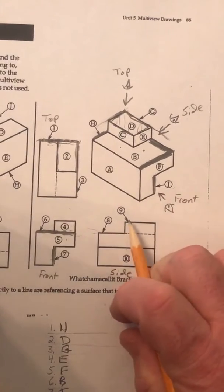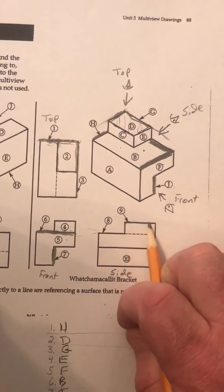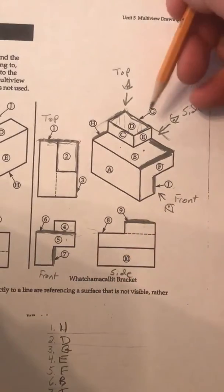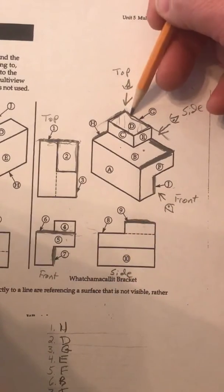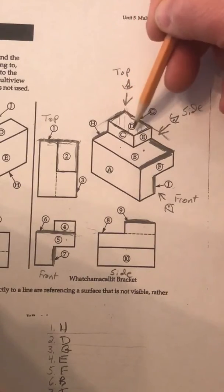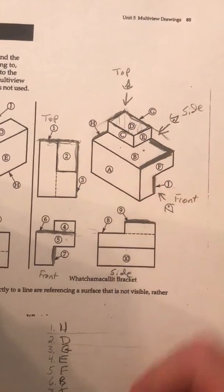Now, 9, pointing to 9, again, this is that top part, the very highest, and as I'm looking at that, that is actually pointing to surface D. So, 9 is surface D.